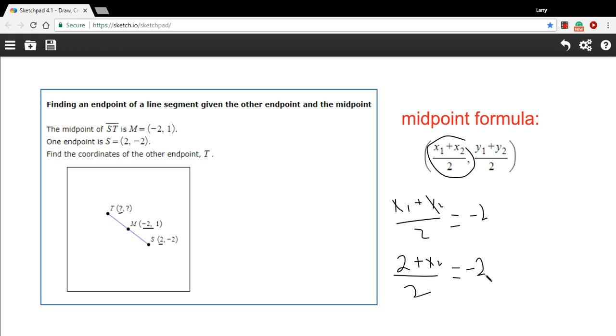Now if I solve this for x2, I will have the x-coordinate of our endpoint. So let's see, we've got a fraction over here. I think I'm going to multiply both sides by two to get rid of that fraction. So these twos will cancel. Negative 2 times 2 is negative 4. So we'll get a negative 4 over here, and we'll get 2 plus x2. To get the x2 alone, I just have to subtract 2 from both sides. And I get x2 equals negative 6.